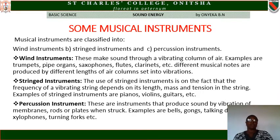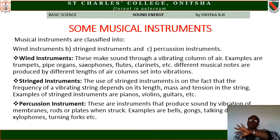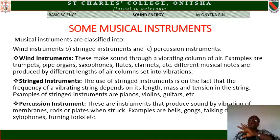Percussion instruments are instruments that produce sound by vibration of a membrane, rod, or plate when struck. Examples are bells, gongs, xylophone, talking drum, and so on. It is the percussion instrument that we use to call students together in a school — when you strike a bell on a rod, the students all over the compound will know that the bell is calling them.